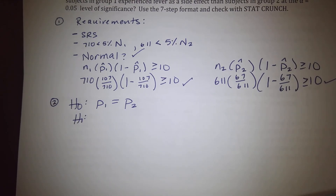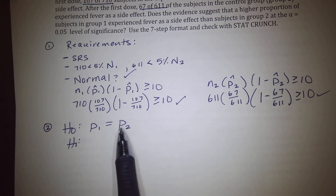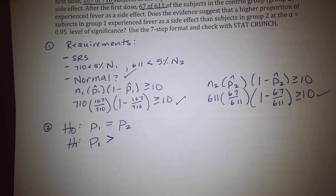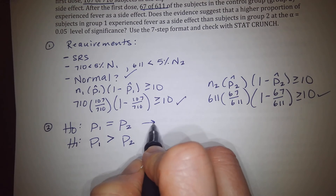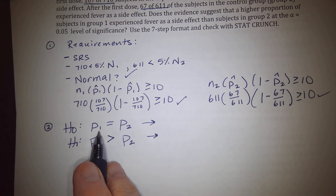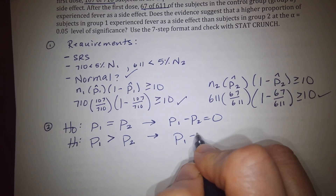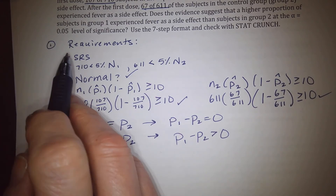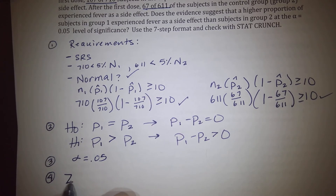Step two: determine the null and alternate hypotheses. The null hypothesis is that the two population proportions are equal — those who experience a fever taking Prevnar equals those who don't. The alternate hypothesis is that the Prevnar group experiences more fevers. You can also write these as: H0: p1 minus p2 = 0, and H1: p1 minus p2 > 0. This is a right-tailed test.